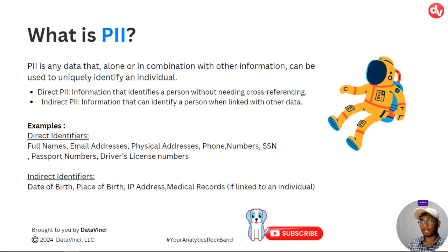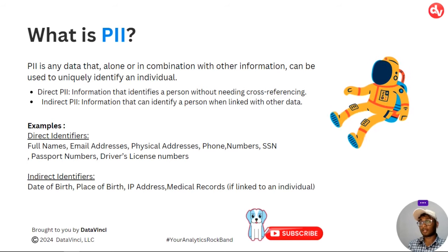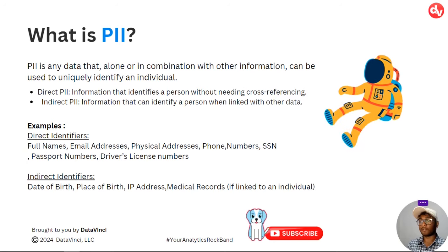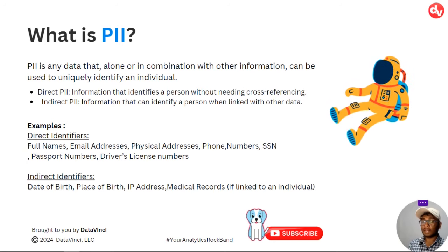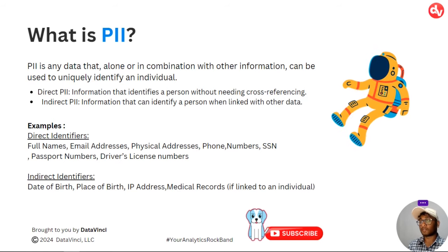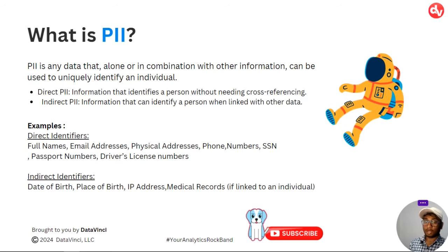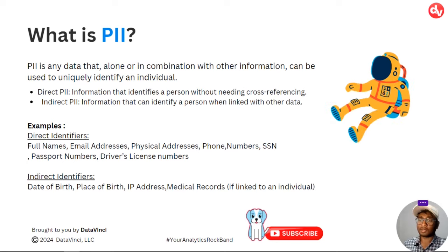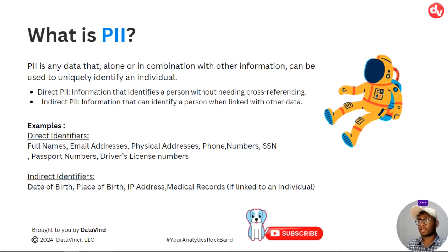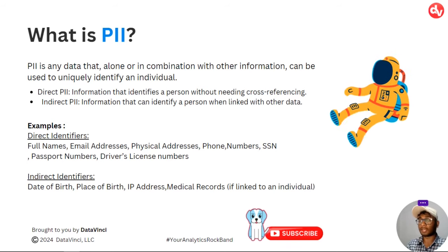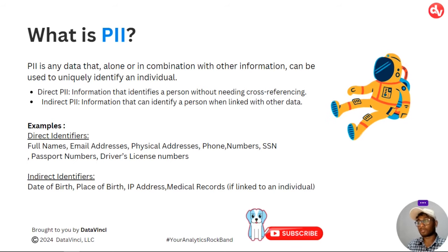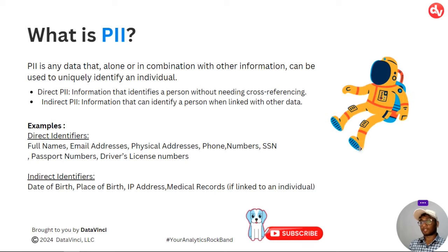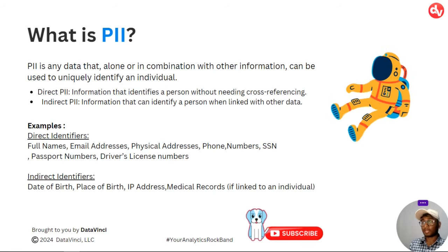For the sake of understanding I've subcategorized PII into two subcategories — note that GA4 does not distinguish between direct PII and indirect PII, this is just for understanding. Direct PII is something that in itself can identify a person without any cross-referencing. Direct identifiers include full names, email addresses, physical addresses, phone numbers, SSNs, government ID numbers, driver's licenses, etc. Indirect PII would require linkage with other data — for example, date of birth, place of birth, IP addresses, or medical records.